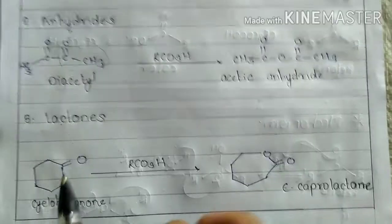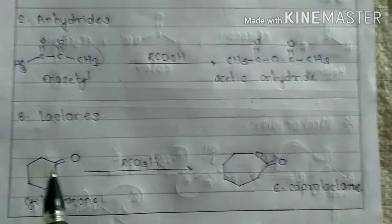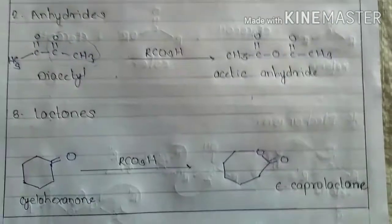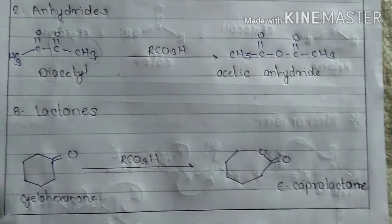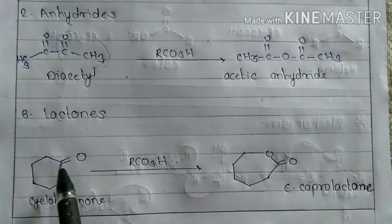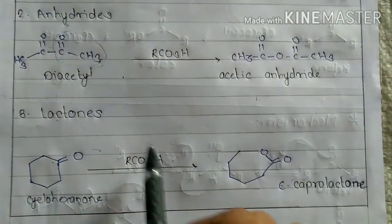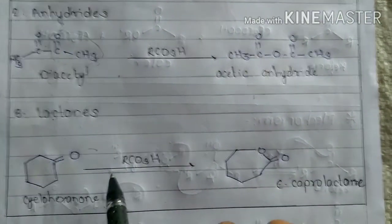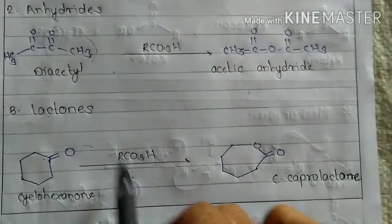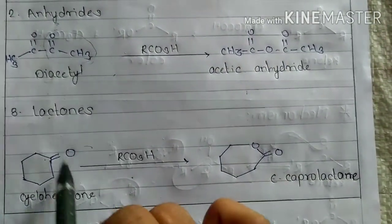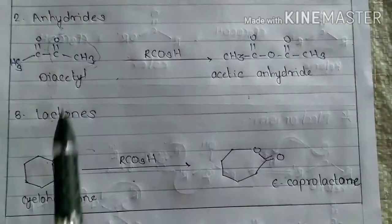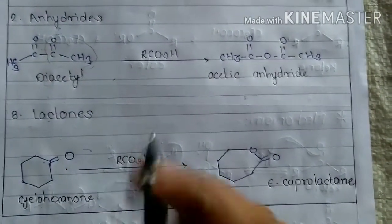Then the third and last application is formation of lactones. Here is our cyclohexanone. First, there is the formation of carbocation. Then another peracetic acid molecule attacks on that carbocation. Then the formation of our intermediate. After the rearrangement there is formation of ester.